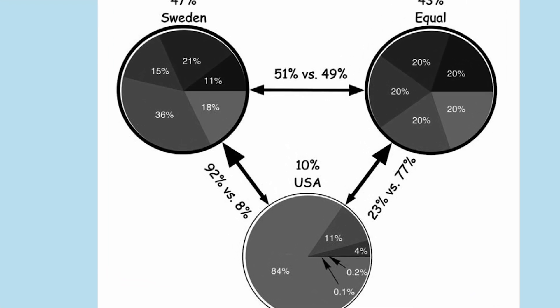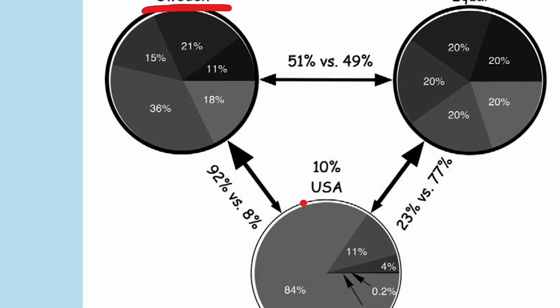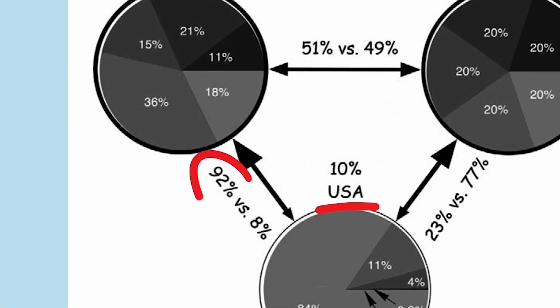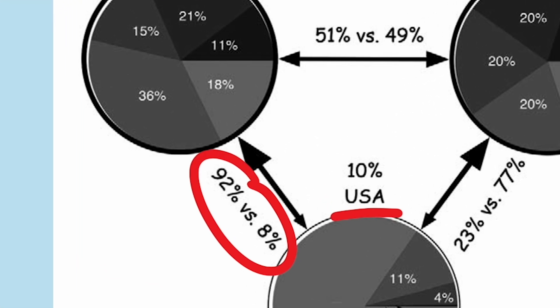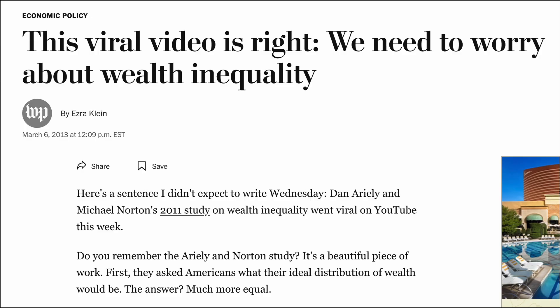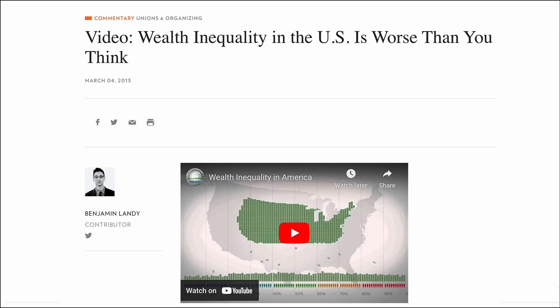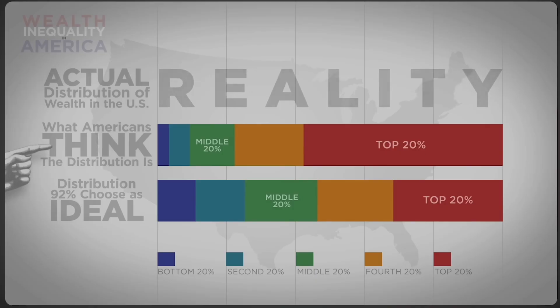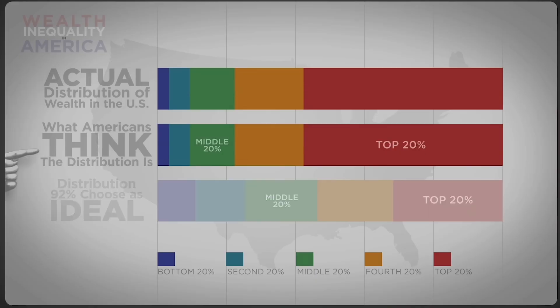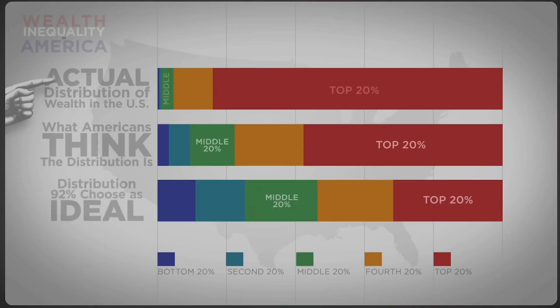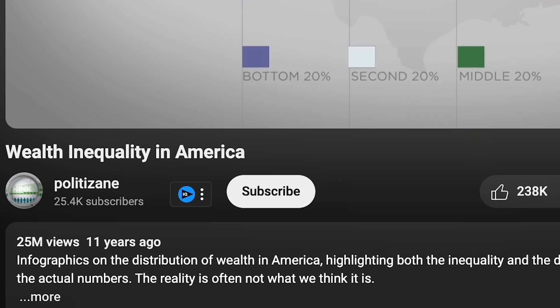After a 2011 paper showed that Americans largely prefer a fairly equal wealth distribution, many media outlets shared results of the study, including this beautifully made video that has been watched over 25 million times.